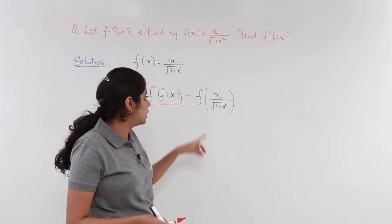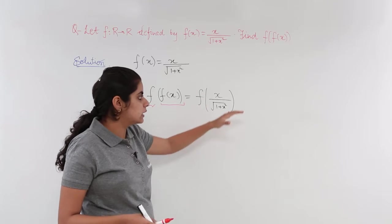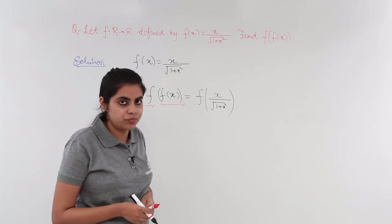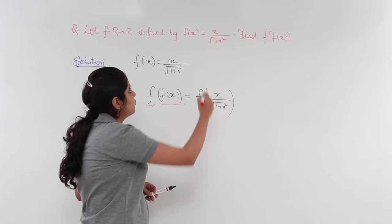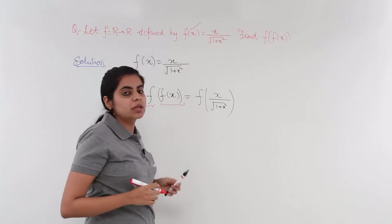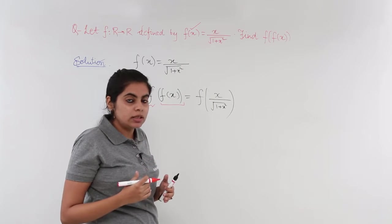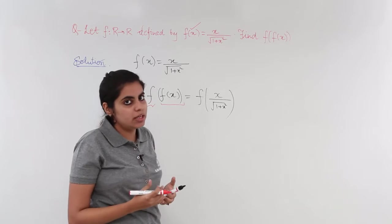Now, this x upon under root 1 plus x square is not the solution. We have to move further on f of this whole bracket.